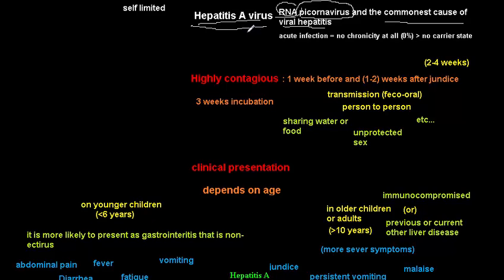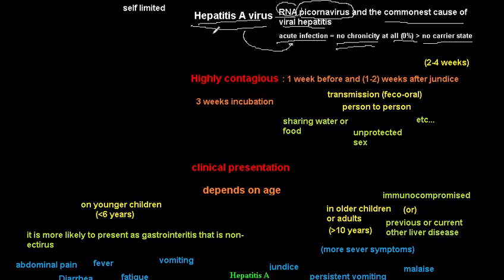All cases of hepatitis A virus are acute infection — there is no chronicity of hepatitis A virus at all. The percentage of chronic cases is zero percent, so we have no carrier state in this disease. Hepatitis A virus is self-limited in most cases.